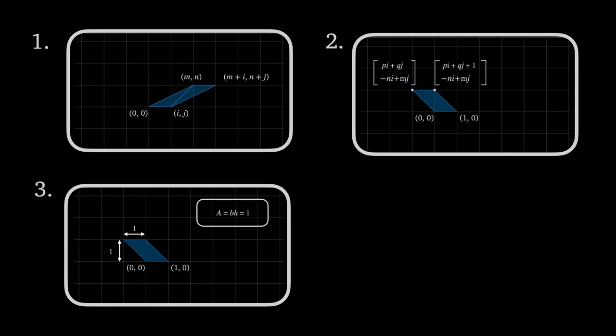Therefore, the original triangle which was half of a parallelogram has an area of one half.